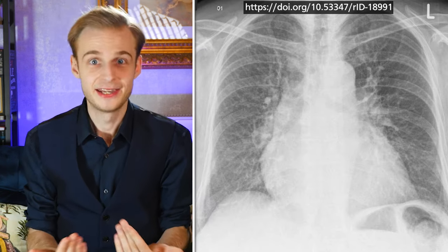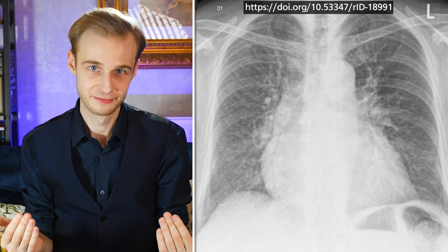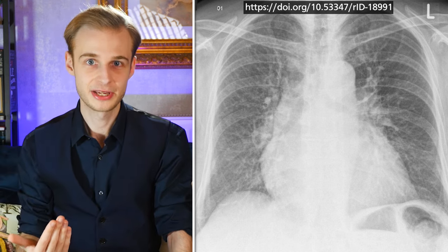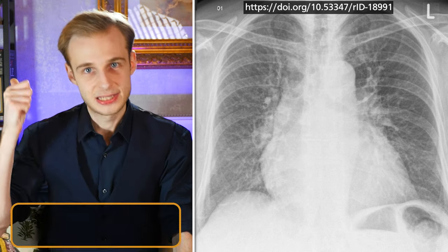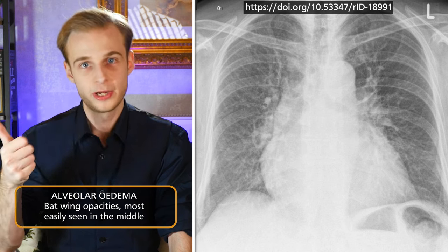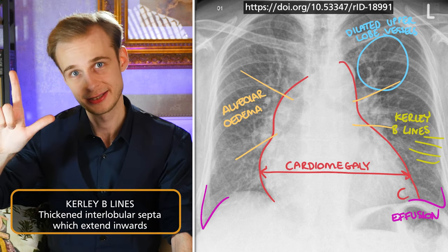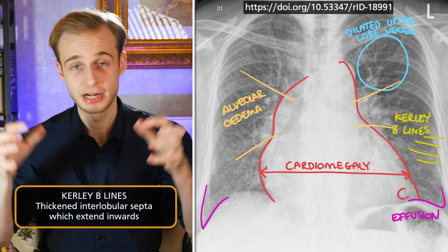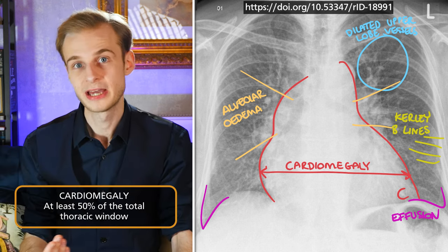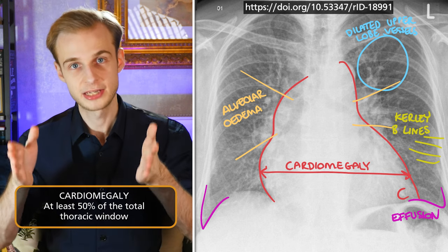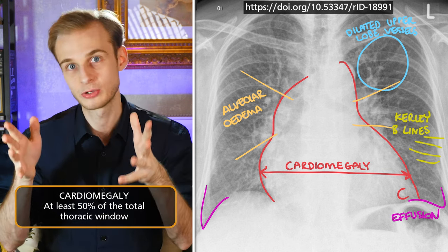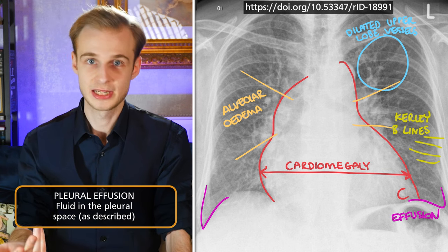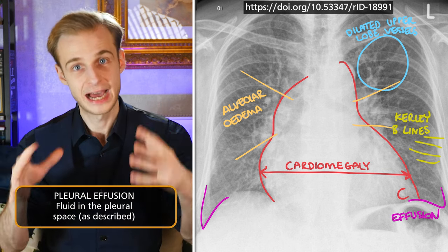Heart failure is another favourite of examiners. There are five key distinguishing features that you should be able to spot on a chest x-ray, remembered easily as A, B, C, D, E. A is for alveolar oedema, signified by batwing opacities. B is for curly B lines — specifically thickened interlobular septa, which sit perpendicularly to the surface of the pleura and extend into it. C is for cardiomegaly, where the heart should take up at least 50% of the total thoracic window. D is for dilated upper lobe vessels. And E is for pleural effusion, as back pressure forces fluid out into the lung tissue.